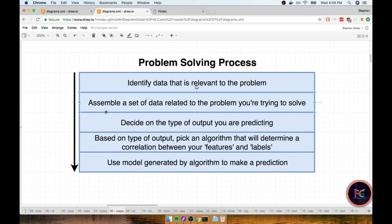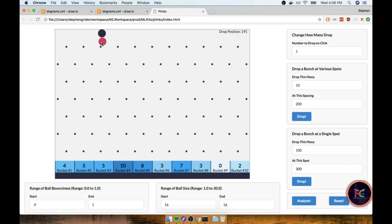So now it's up to us to somehow assemble a set of data related to the problem that we're trying to solve. Essentially we want to click around a whole bunch on this diagram and record a bunch of distinct data points. We want to record where we dropped the ball from, how bouncy the ball was at that point in time, the ball size at that point in time, and which bucket it eventually fell into.